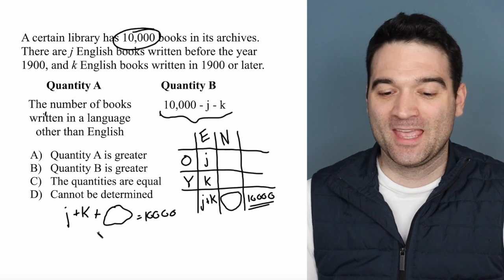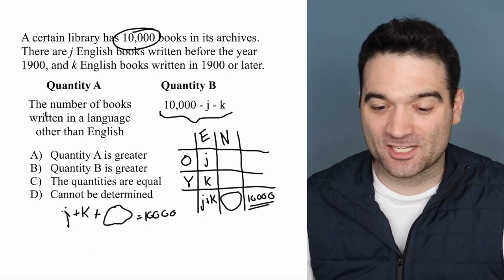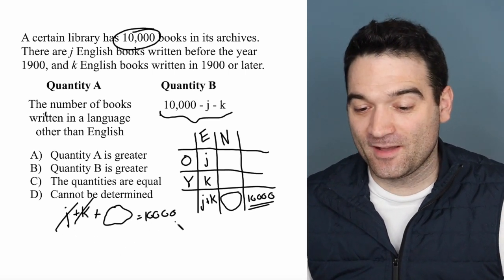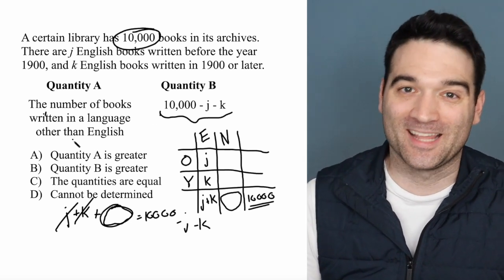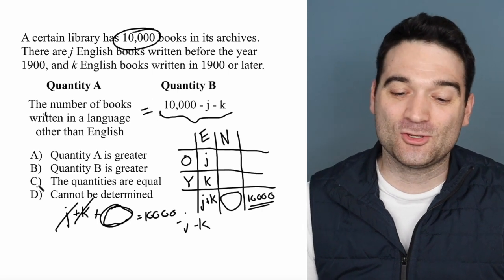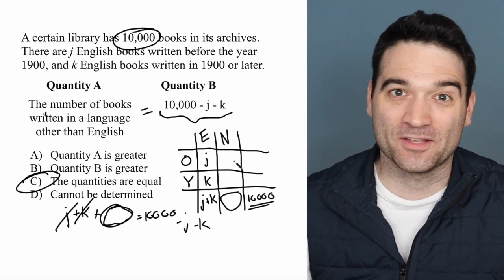Well, do you see where this is going? If I subtract J and I subtract K, then I find that 10,000 minus J minus K is in fact equal to the number of books written in a language other than English, meaning that these two quantities are exactly the same.